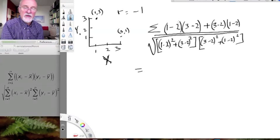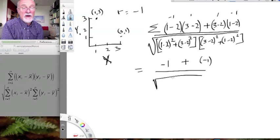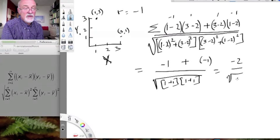Alright, so what do we get? The numerator, 1 minus 2, so minus 1, 3 minus 2 is 1, 3 minus 2 is 1, 1 minus 2 is minus 1. Okay, so we have minus 1 plus a minus 1, all divided by the square root of 1 plus 1 times 1 plus 1, equals minus 2 divided by the square root of 4, equals minus 2 divided by 2, equals minus 1.